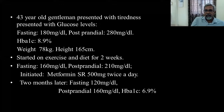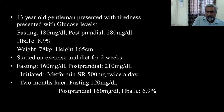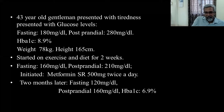Clinical case: A 43-year-old gentleman presented with tiredness, fasting glucose of 180, postprandial of 280, HbA1c of 8.9%, weight 78 kg. He started on exercise and diet for two weeks but glucose levels remained elevated. Being practical, we started metformin 500 mg twice a day. Within two months, his HbA1c levels came under good control and fasting and postprandial glucose levels also dropped to adequate levels.